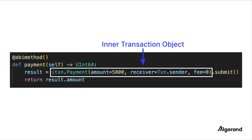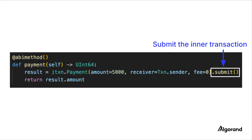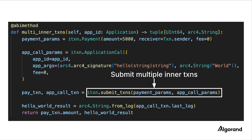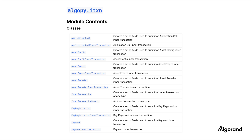Inner transactions are defined using the parameter types inside the ITXN module, and can then be submitted individually by calling the .submit method, or as a group by calling the submit transactions method.